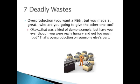The first deadly waste is overproduction. For the middle schoolers I talked to about manufacturing and process improvement, I had an example where I made a peanut butter and jelly sandwich in front of them. So a lot of my examples are going to involve a PB&J. Overproduction would be: say you want a peanut butter and jelly, you really only need one, but for some reason you made two. Have you ever been really hungry and got too much food and had to throw some away? That's overproduction — they overproduced because of your demand.